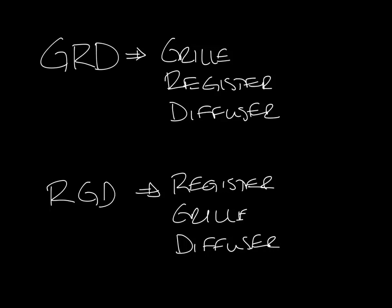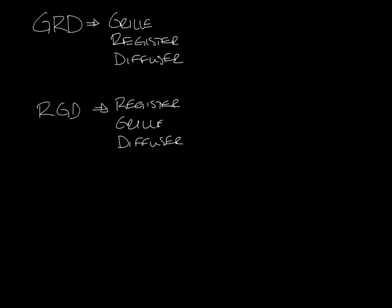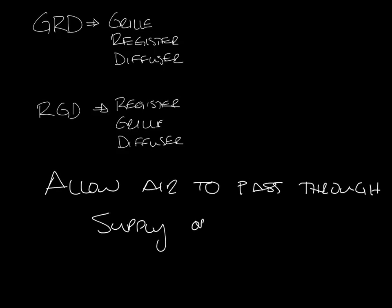Grills, registers, and diffusers are all devices that allow air to pass through them into a space when used as a supply, or out of a space when used as a return. The words are often used interchangeably, but they're technically different things.